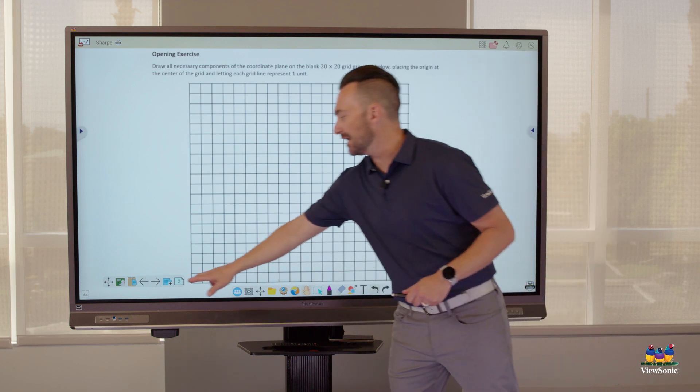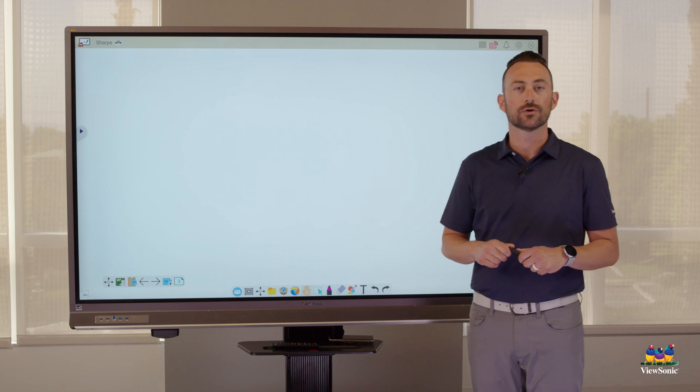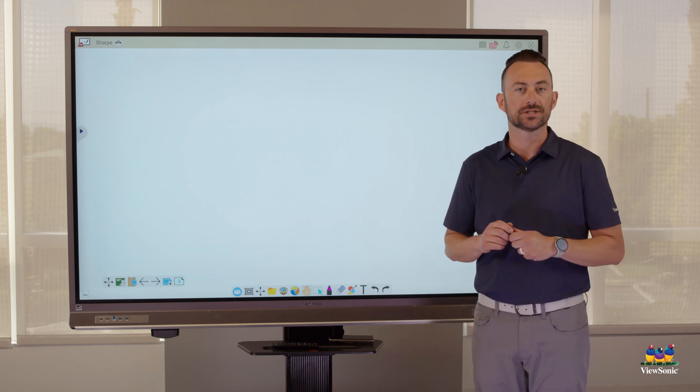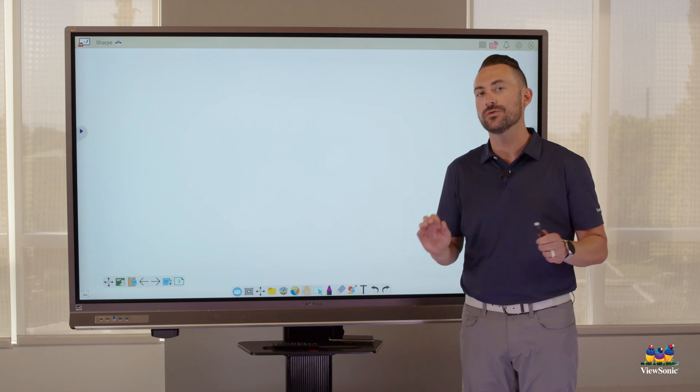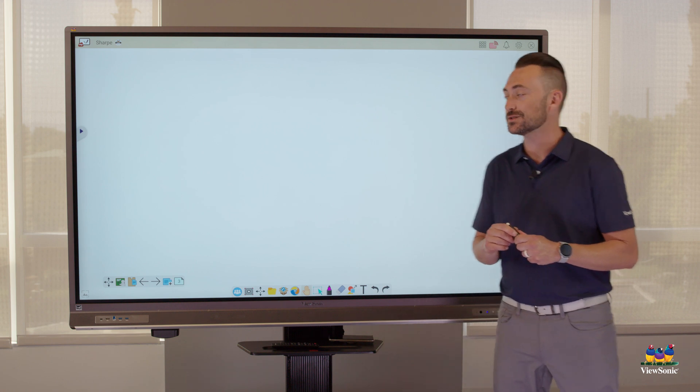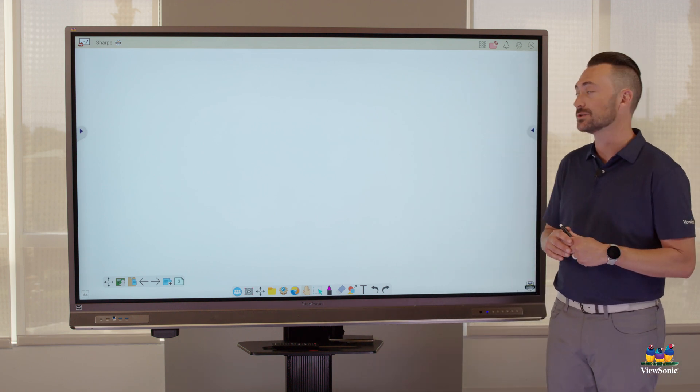One feature we've added to the 52 series of our viewboards is the ability to have Infinite Canvas turned on all the time. Now remember, this is only for 52 series. So if you have an older version of 50 series, unfortunately, it doesn't work this way. You just have to keep using the Infinite Canvas tool.